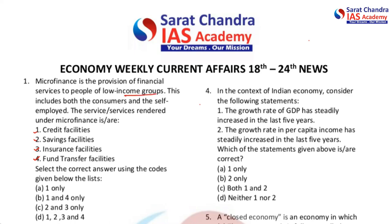This includes both consumers and self-employed. The services rendered under microfinance are: one, credit facilities; two, savings facilities; three, insurance facilities; and four, fund transfer facilities. Which of the following are the correct answers using the codes given below? Options are: one only, one and four only, two and three only, or one two three four.